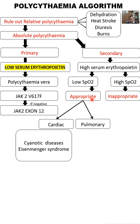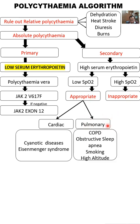Pulmonary conditions can also cause appropriate secondary polycythemia with low SpO2. These include chronic obstructive pulmonary disease, obstructive sleep apnea, carbon monoxide poisoning in chronic smokers — detectable via a carboxyhemoglobin test — and high altitude, where low SpO2 triggers a compensatory increase in red cell mass.